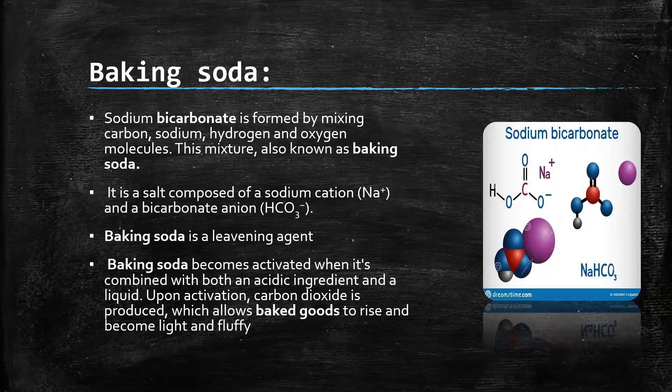The second ingredient is baking soda. Sodium bicarbonate is formed by mixing carbon, sodium, hydrogen, and oxygen molecules. This mixture is also known as baking soda. It is a salt compound of sodium cation and bicarbonate anion. Baking soda is a leavening agent — it becomes activated when combined with an acidic ingredient, and upon activation, carbon dioxide is produced, which allows baked goods to rise and become light and fluffy.